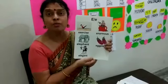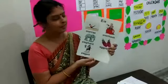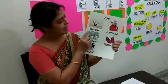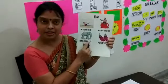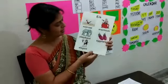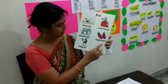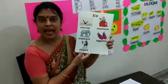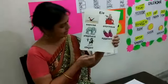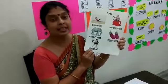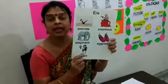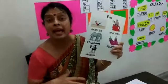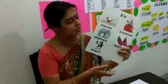Exercise. Elephant. Eggplant. Elegant — the king and the queen wear elegant clothes.